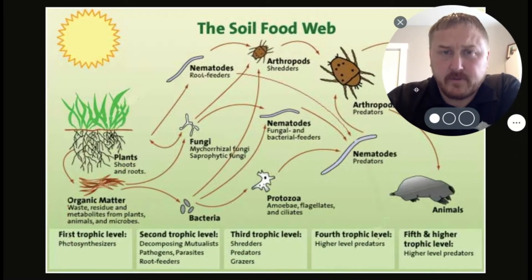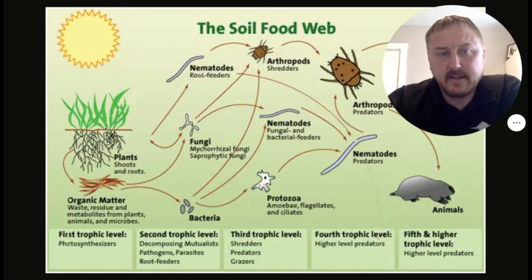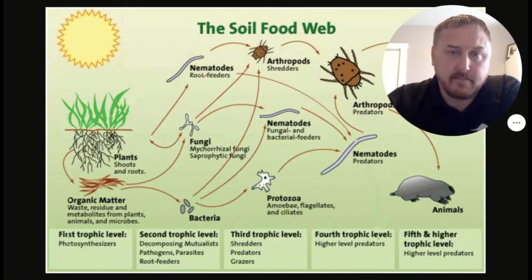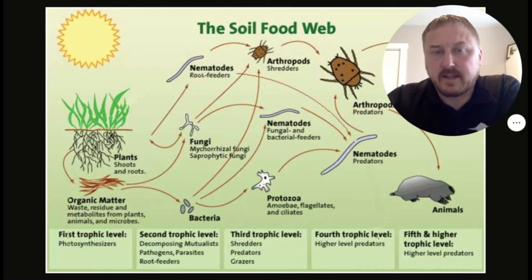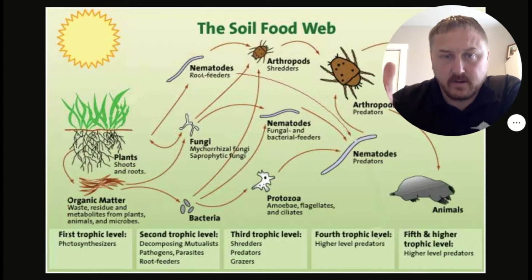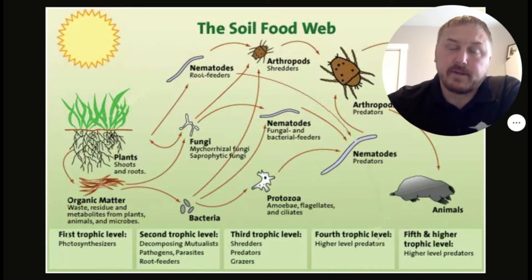Here we go — the soil food web. We all know the basics of a food web from science class: energy comes from the sun, it goes to the plants, and then the plants generally feed organisms above the surface. Common food webs have things like mice or deer consuming the grass, and then we get into the whole predator and prey, herbivores and carnivores, building the typical food webs of an ecosystem.